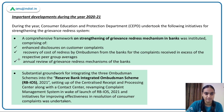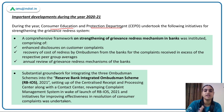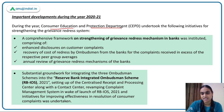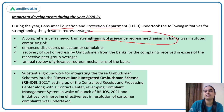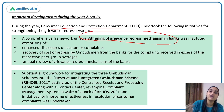Two major initiatives were taken by RBI's Consumer Education and Protection Department. First, a framework was released to strengthen the grievance redressal mechanism in banks, covering enhanced disclosures on customer complaints. It also mentions how the ombudsman can recover amounts from banks if the number of complaints exceeds the average level, incentivizing banks to provide better services.